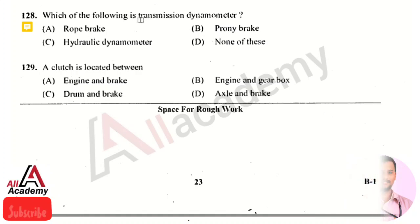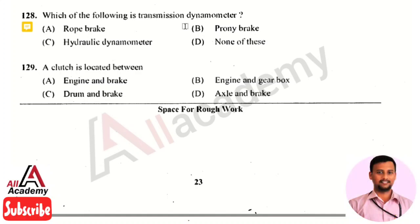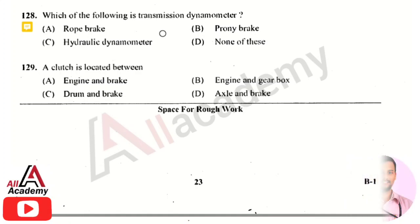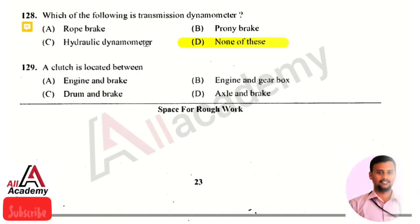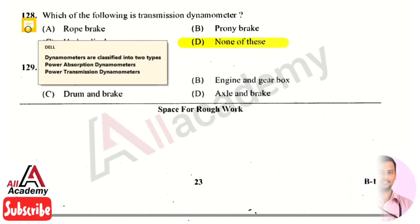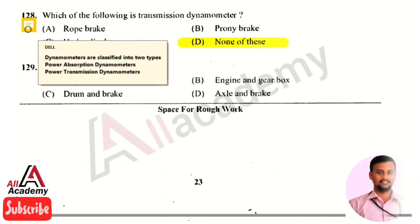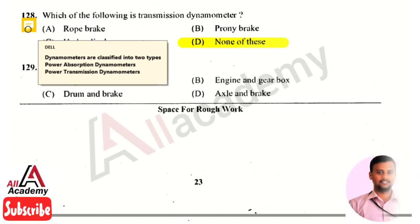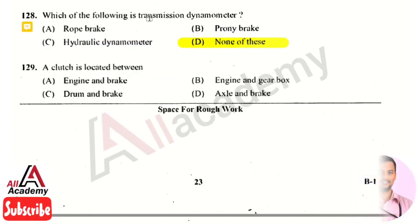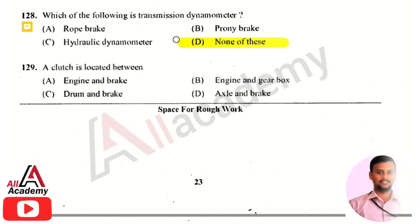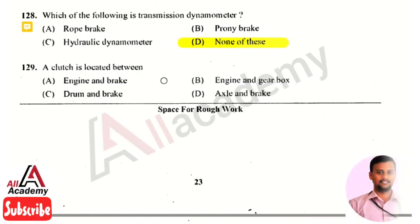Among the given options, none of the above is a transmission dynamometer. Dynamometers are classified into two types: power absorption dynamometers and power transmission dynamometers. The options listed are all power absorption dynamometers, so the answer is none of the above.